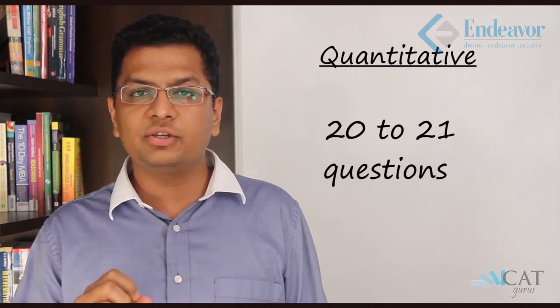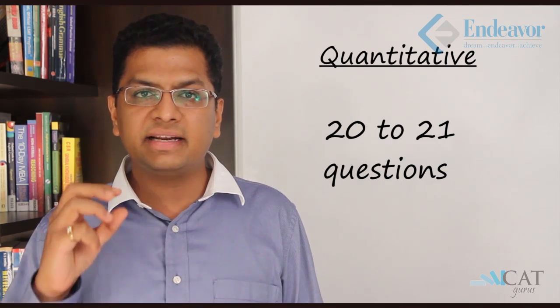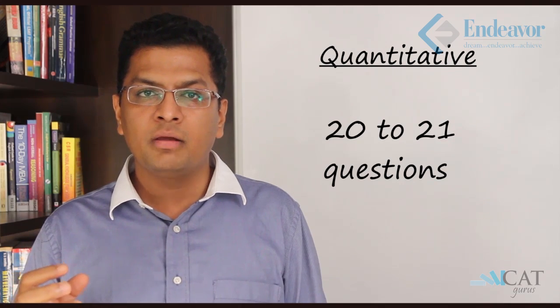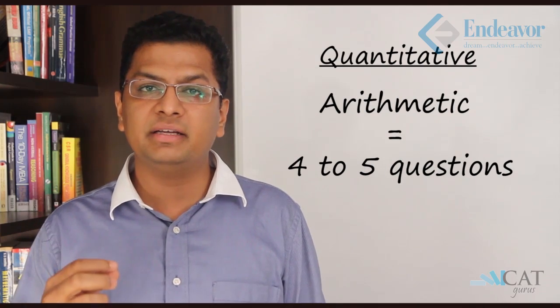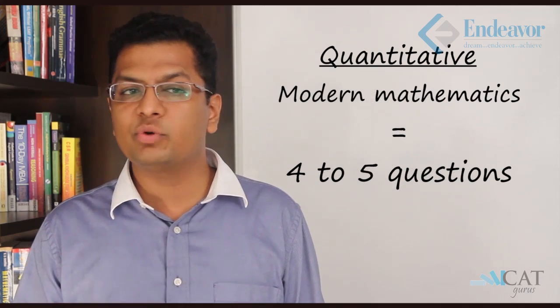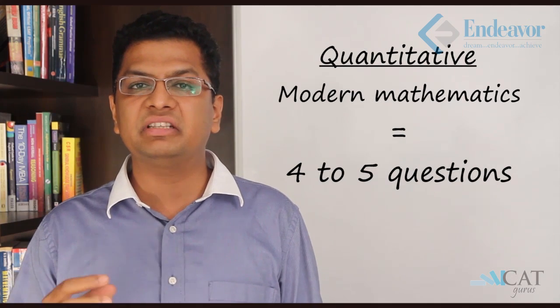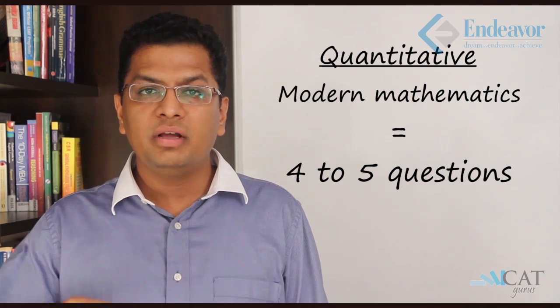First of all, out of the 30 questions, close to 20 to 21 questions are from the quantitative part and the rest 9 to 10 questions are from the DI part. Breaking down the quantitative part: 4 to 5 questions are from geometry, another 4 to 5 questions are from arithmetic, another 4 to 5 from algebra, and the last set of 4 to 5 questions are from modern mathematics which is inequalities, functions, set theory, and logarithms. It is evenly spread across the 4 areas. This makes up the 20 to 21 questions of the quantitative part.